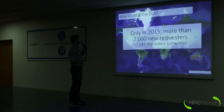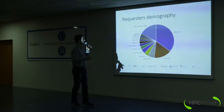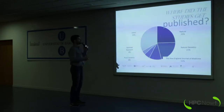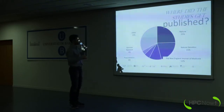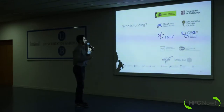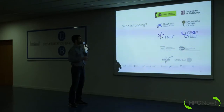In 2015 we gained more than 2,000 new requesters, giving us over 7,000 requesters overall. These are distributed internationally across the States, UK, Canada, Germany, Japan, Australia, and many other countries. The papers citing data held at EGA appear in really high impact factor journals. Funding agencies include both the Catalan and Spanish governments, La Caixa, Estrella Ochoa, CSG, the Spanish National Institute of Informatics, UPF, BSC, and Elixir.